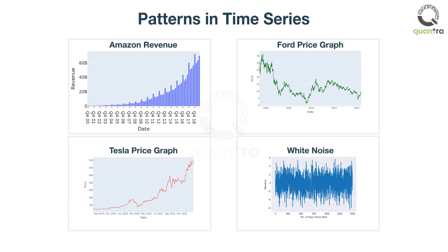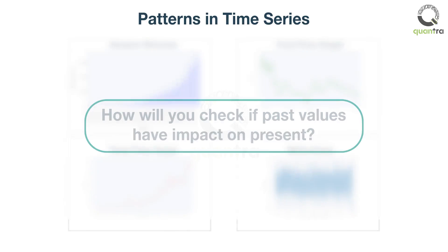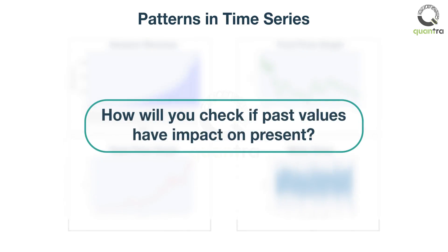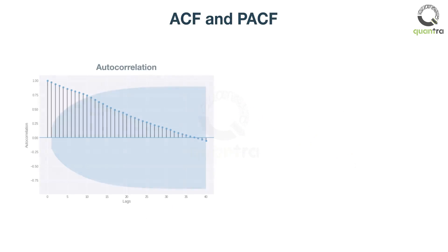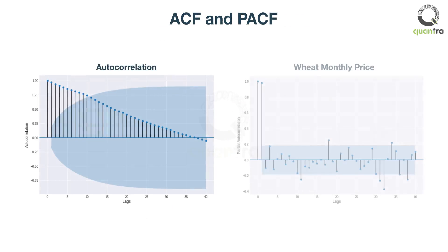Before you start time series analysis, you should make sure that the past values do have some impact on the present values. You use the auto-correlation function (ACF) and partial auto-correlation function (PACF) plot for this purpose. Depending on the results, you will choose a time series model to use for forecasting future prices.